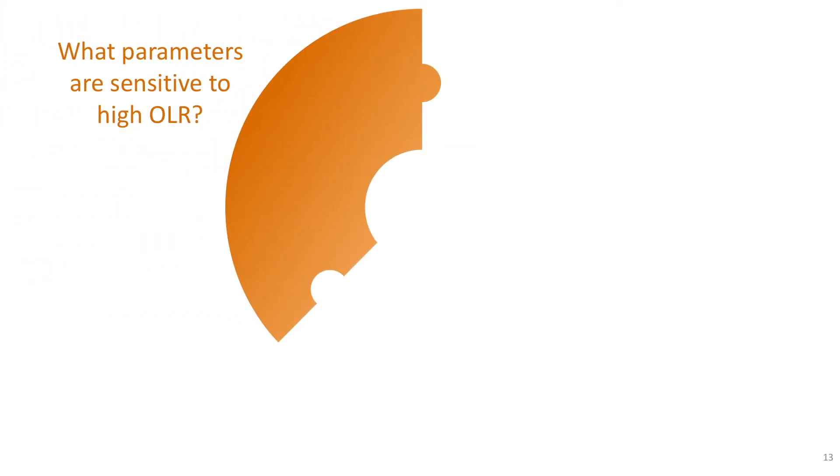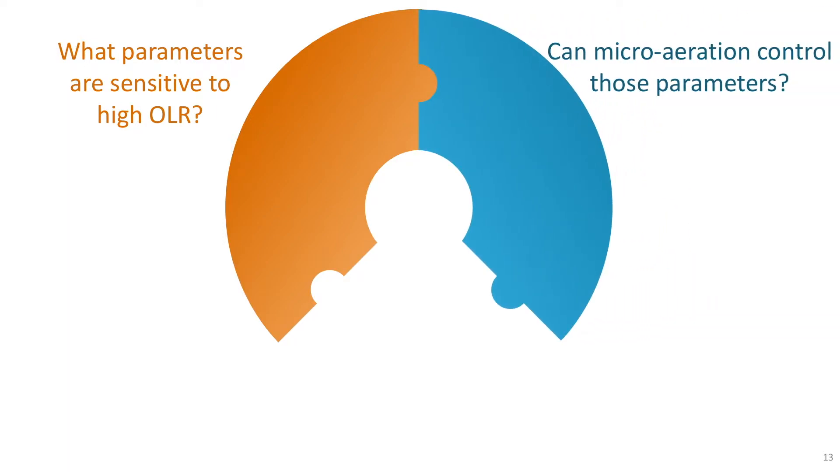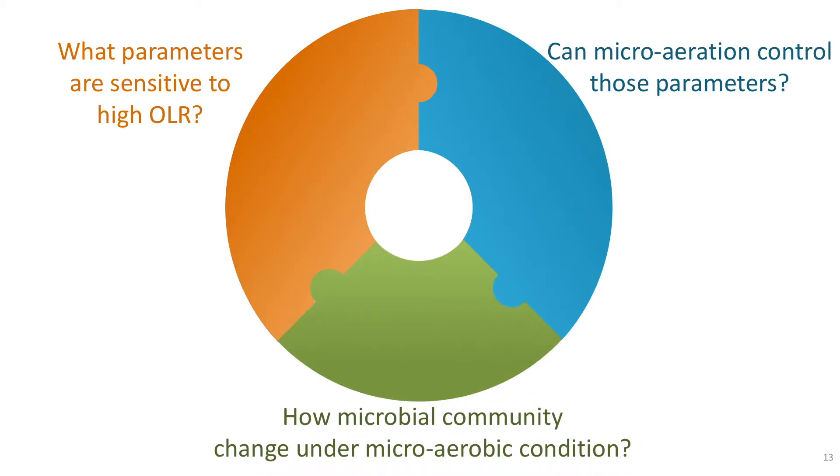These three objectives are equivalent to three research questions that I want to answer. It's like three pieces of the puzzle that help me complete the whole image of the research. Using this, you can structure your research and explain to the audience step by step how you plan to do your research.